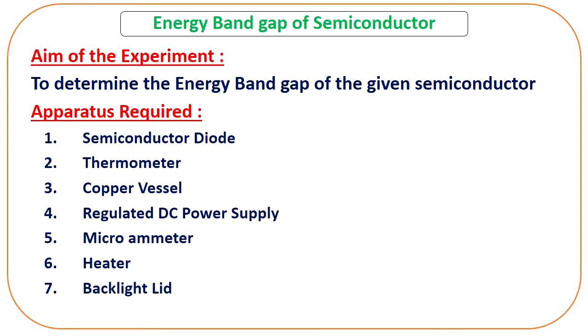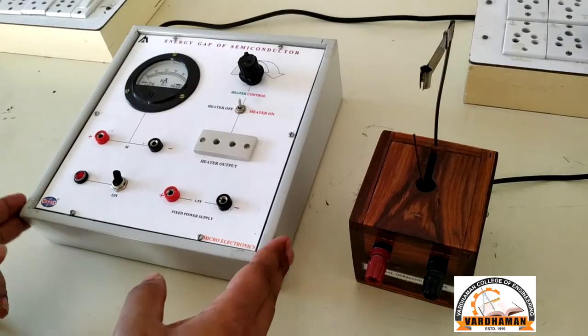Today we are going to learn how to measure the band gap of a particular semiconductor. For this experiment we need some specific apparatus: one semiconductor diode, one thermometer, one copper vessel, a regulated DC power supply, micro ammeter, heater, and backlight lid.